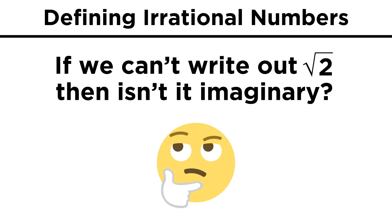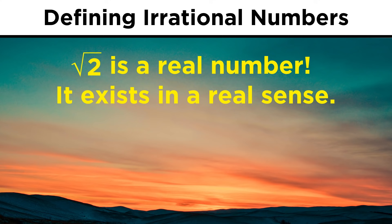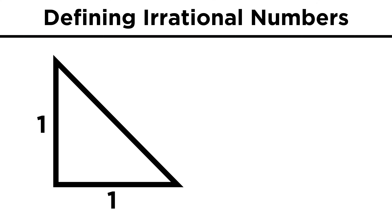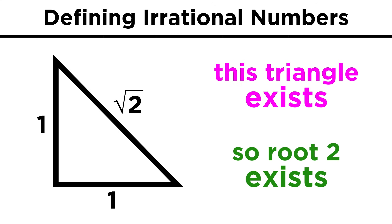Now you might be wondering, if we can't write out this number, no matter what we do, doesn't that make this number imaginary? The answer is no. Nature is very clear in communicating to us that numbers like root two do indeed exist. If you make a right triangle that has legs with a length of one, the third side will have a length of root two. This triangle exists, so root two exists. It is a real number, it is simply irrational.